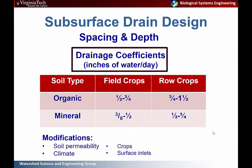This table shows drainage coefficients used in the spacing equation based on crop type and soil type, with some modifications for soil permeability and crop type. Surface inlets are important because they add a lot to the volume of water in your system if you have a direct conduit between the surface and the subsurface.